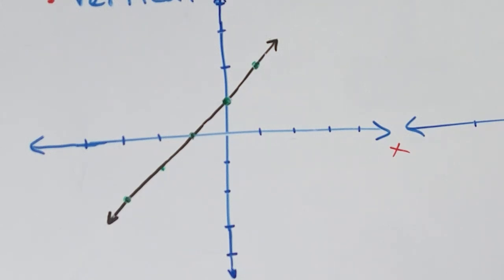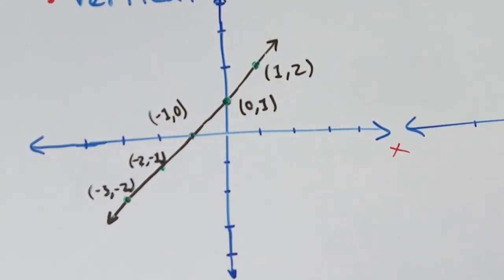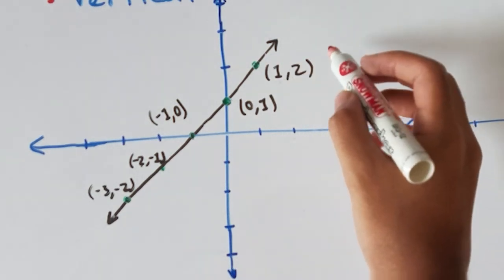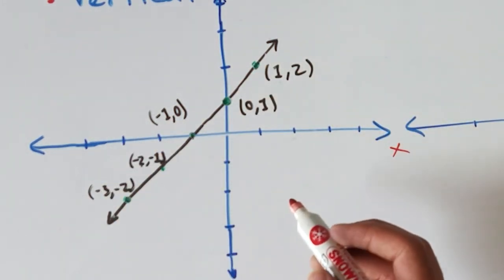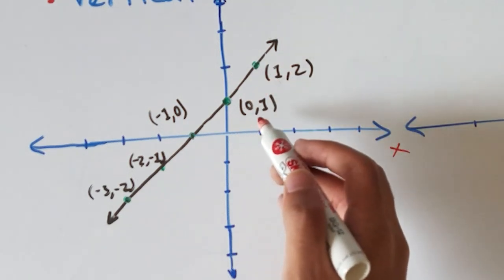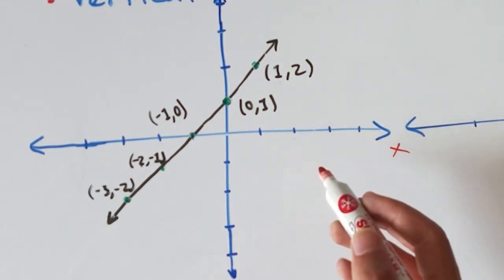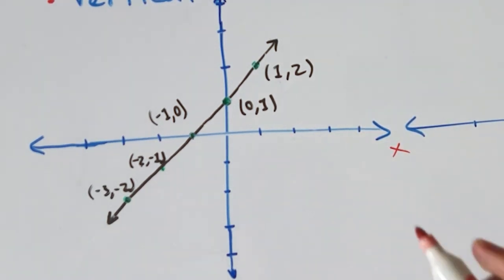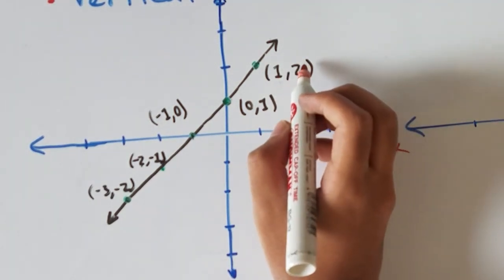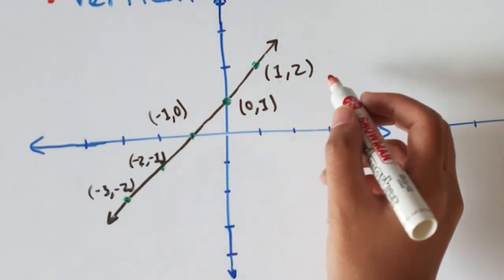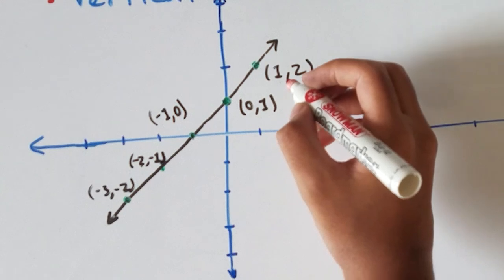Let's mark some points on the original function and perform the vertical stretch with factor 2. For vertical stretches, you're not multiplying the x values by the stretch factor — instead you're multiplying the y values by 2. So for the first point (1, 2), multiply the y part by 2: you get (1, 4) because 2 times 2 is 4. For the second point (0, 1), multiply the 1 by 2, giving new point (0, 2).